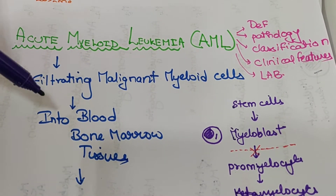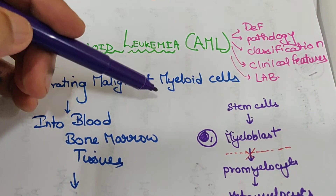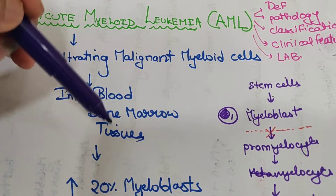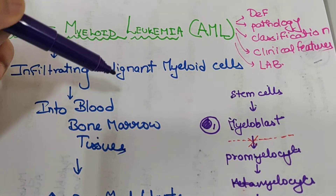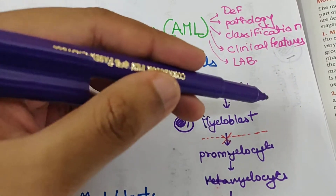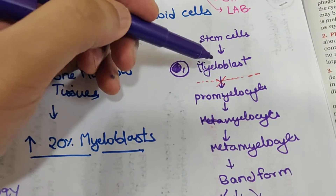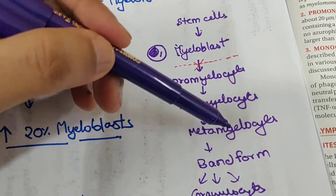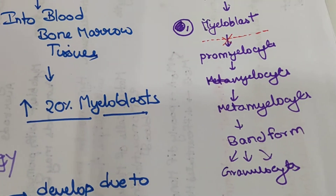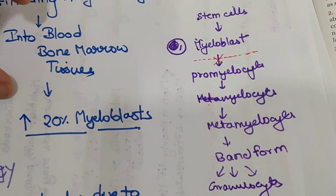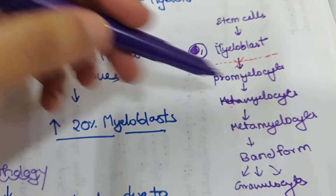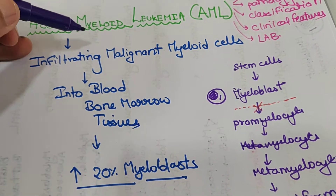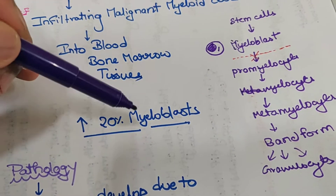AML is due to infiltrating malignant myeloid cells into the blood, bone marrow, or tissues. We know that pluripotent stem cells can develop into the myeloid series or lymphoid series. In the myeloid series, stem cells develop into myeloblasts, which mature into promyelocytes, myelocytes, metamyelocytes, band forms, and finally into granulocytes — neutrophils, basophils, etc. The characteristic feature of AML is greater than 20% myeloblasts in the bone marrow or blood.